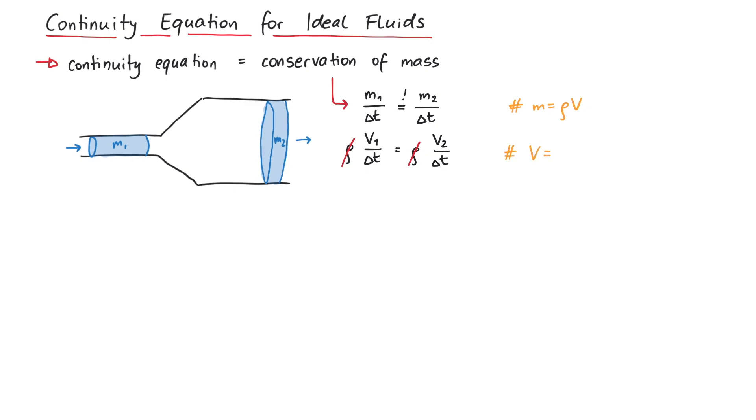Next, we can write the volume as cross-sectional area A times the horizontal length delta x. And if we consider infinitesimally small time steps, then the fraction becomes a derivative, and we get the continuity equation, where v stands for fluid velocity.